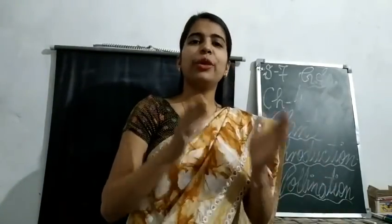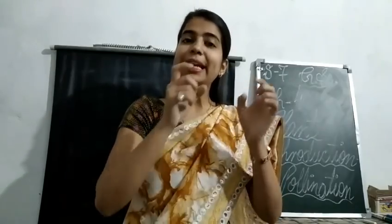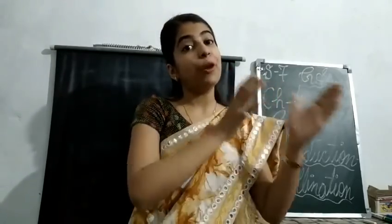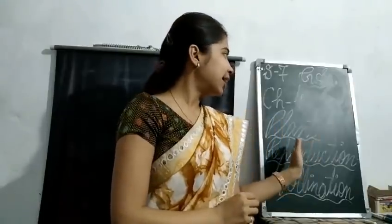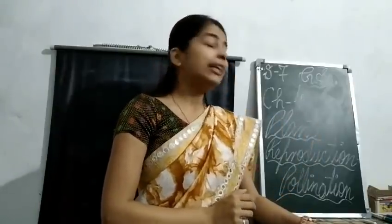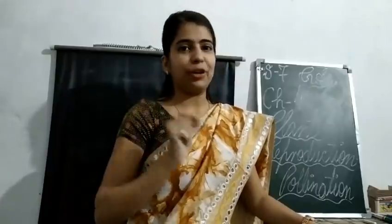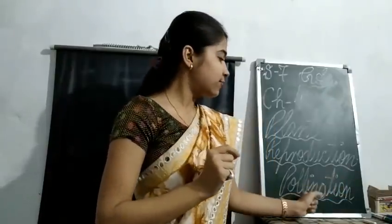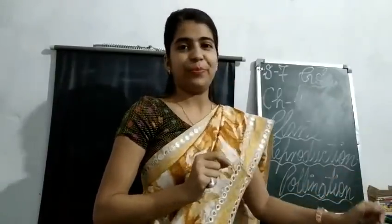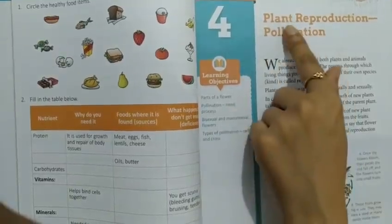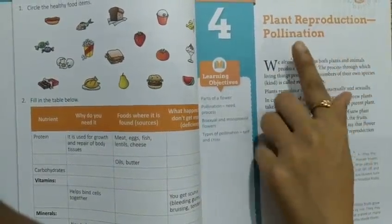Don't worry about jumping portions — this is done so that you get less confused with the syllabus, and in every semester you will stay in touch with previous semester content. So let us begin with Chapter 4: Plant Reproduction and Pollination.